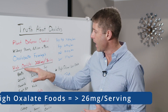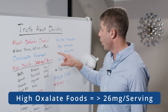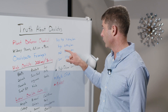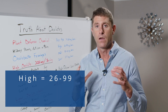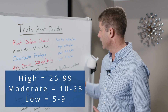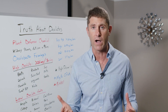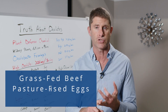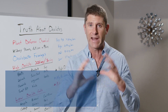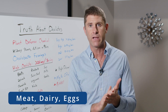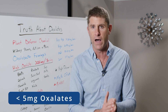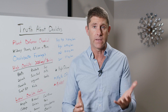A high oxalate food is characterized by anything over 26 milligrams per serving. A very high oxalate food would be over 100 milligrams per serving. High is 26 to 99, moderate is 10 to 25, and low is five to nine. Some things have virtually no oxalates — for example, animal foods: grass-fed beef, pasture-raised eggs, organic yogurt. Meat, dairy, and eggs have less than five milligrams — very little, microscopic levels of oxalates.